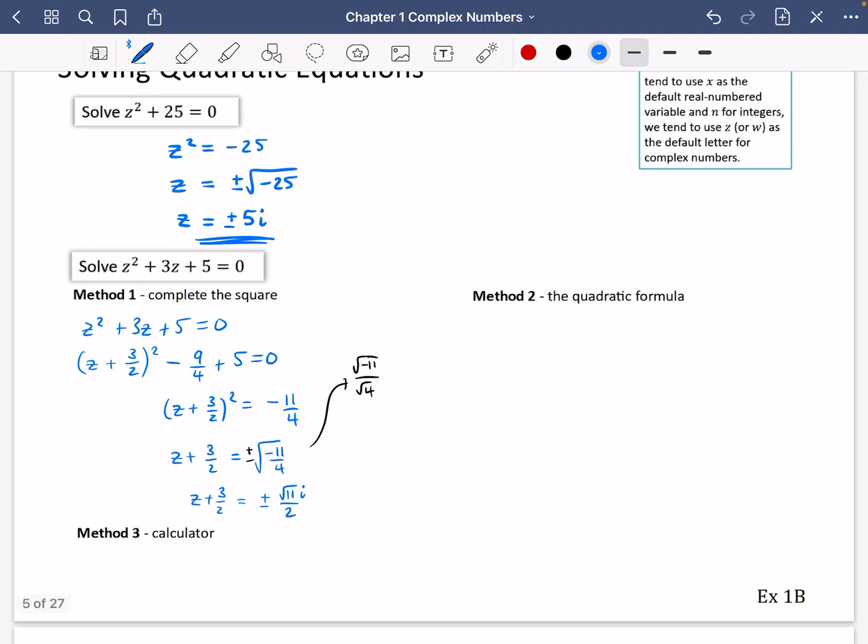So if we just finish this one off, we get that z is going to be equal to subtracting that 3/2, minus 3/2 plus or minus the square root of root 11 over 2i. The way we tend to do this is we always have the real number first and then the imaginary number afterwards.